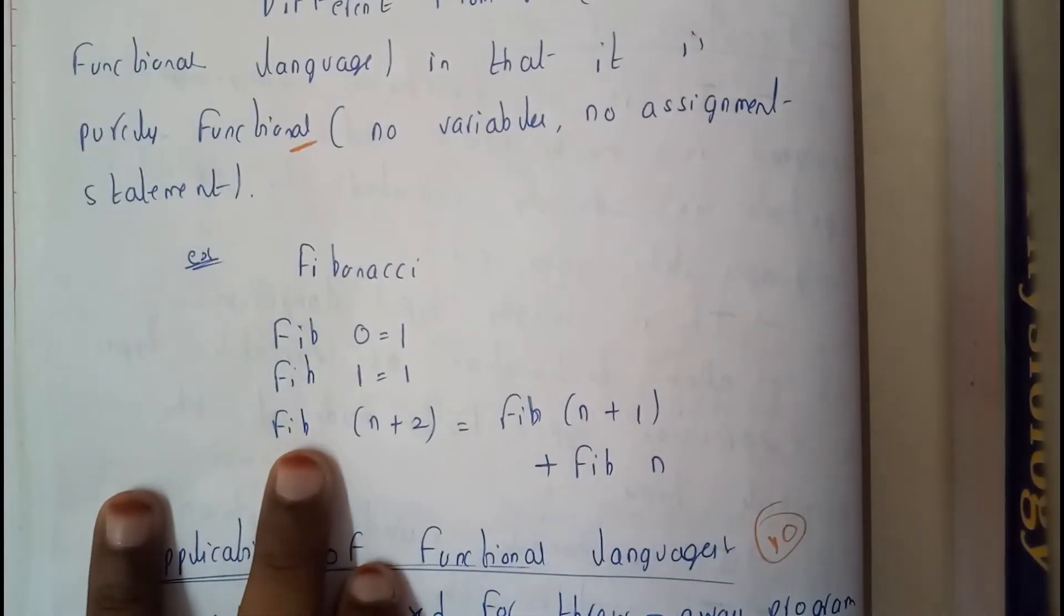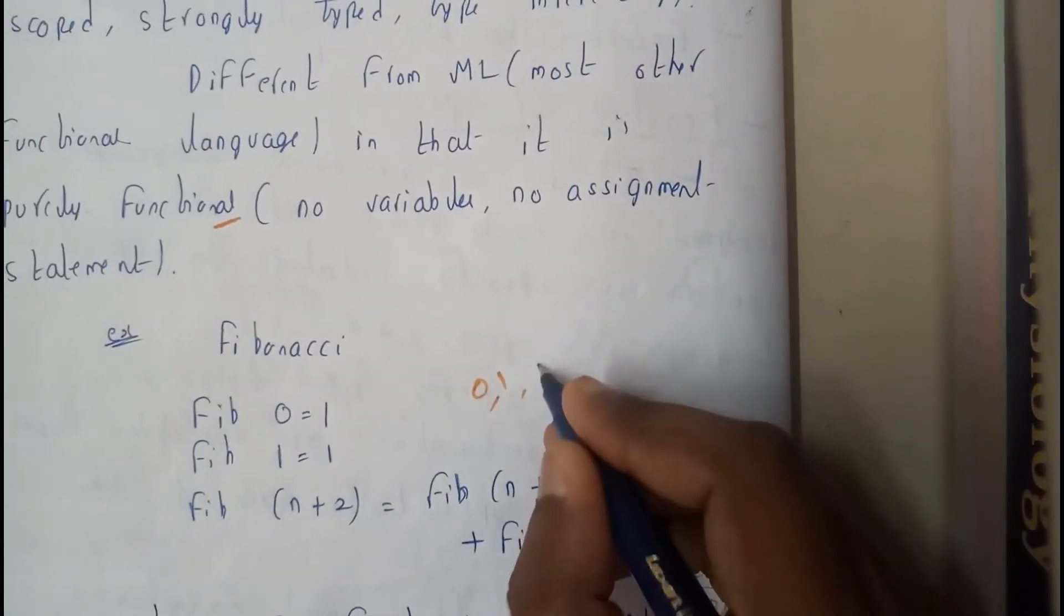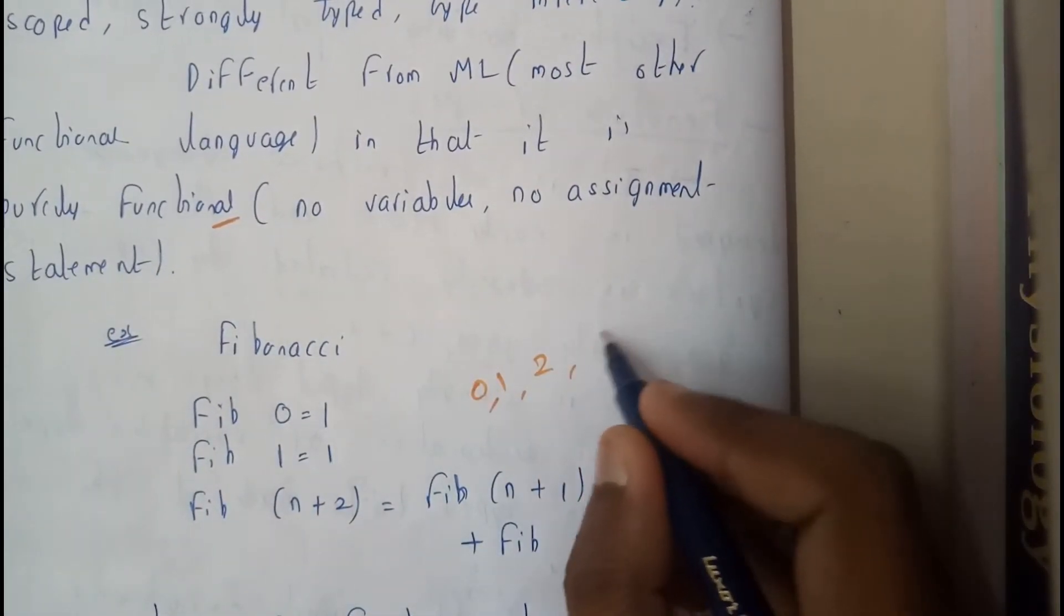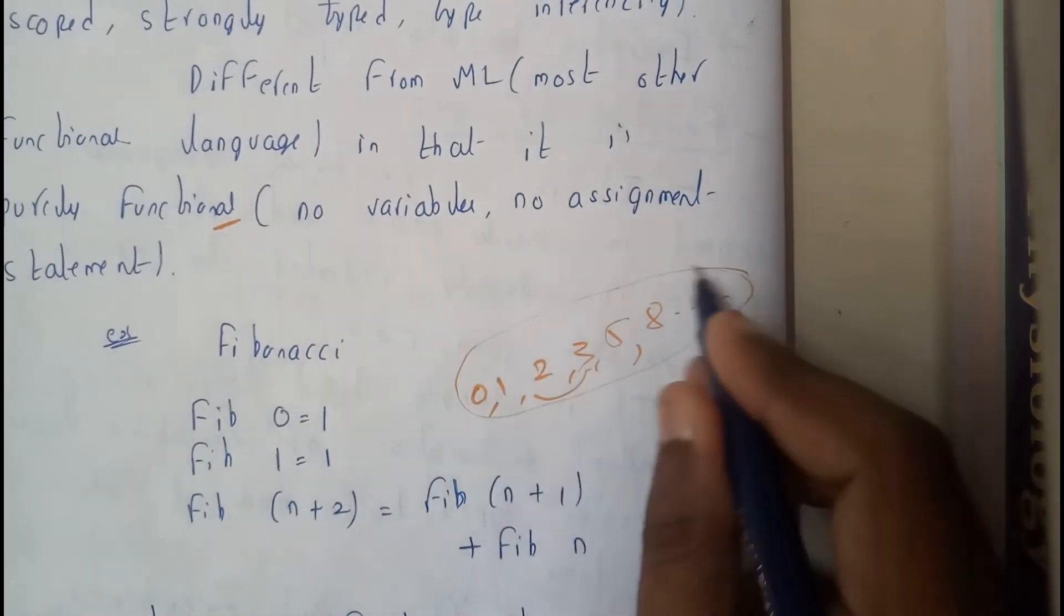...initially it is zero, then it is one, then it is two, then it will be three. Then it will be five, then it will be eight. Like that, this is the Fibonacci order, guys.